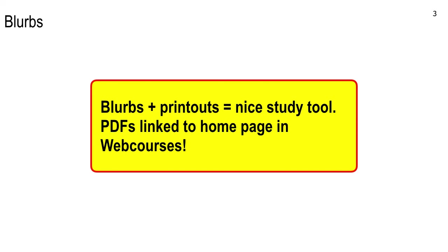For each test, look at your printout, it'll say test form A, B, C, or D, then go on web courses and download the PDF for your test form — like exam one blurb C. Use that to correlate with your printout. The exception is: if you come to office hours, I'll let you look at the verbatim test. You can't copy it, but you can eyeball it and take notes. Only in office hours though.